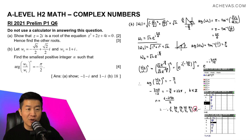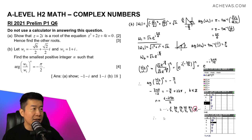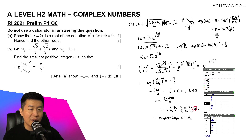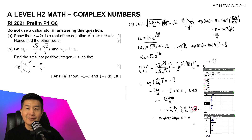Therefore, the smallest integer value for n is equal to 18.